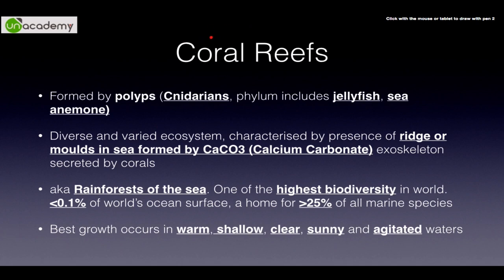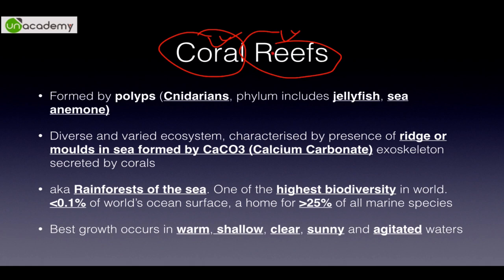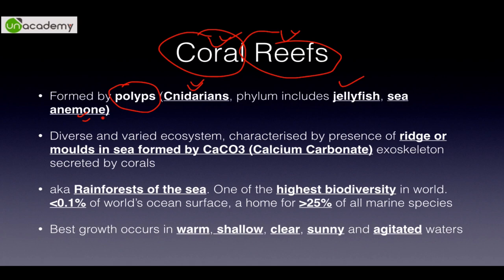We will deal with coral reefs first. What do you mean by coral? What do you mean by reefs? Basically these are formed by polyps. Polyps are from phylum Cnidaria. There is phylum Protozoa which includes amoeba, phylum Porifera which includes sponges, then phylum Cnidaria which includes coral reefs, jellyfish and sea anemone, then Ctenophora, Platyhelminthes, Aschelminthes, Annelida, Arthropoda, Mollusca, and Echinodermata — these are the ten major invertebrate phyla, then we have Chordata.